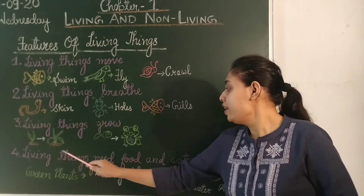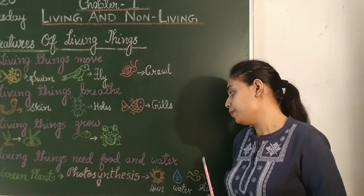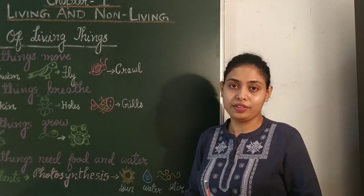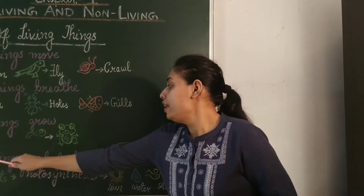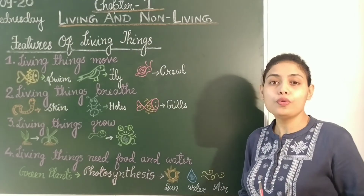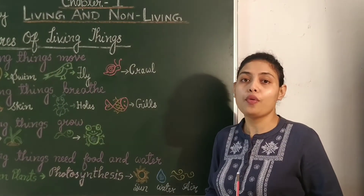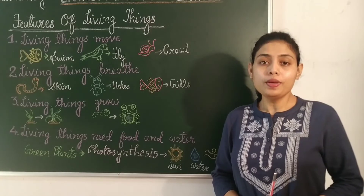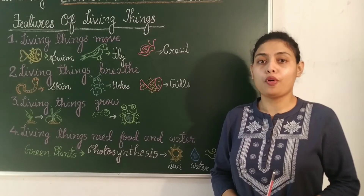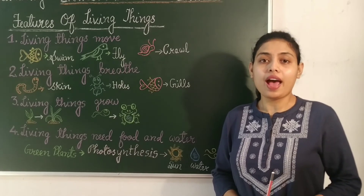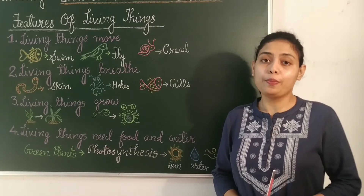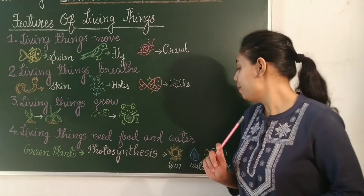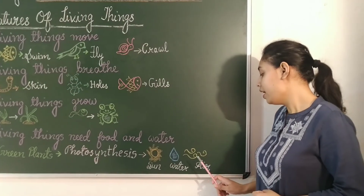Fourth feature: living things need food and water. Food and water are very important for any living organism and keep us alive. We get energy from our food. Humans and animals get their food from other animals and plants, whereas green plants can make their own food. The process is known as photosynthesis. For photosynthesis, green plants require sunlight, water and air.